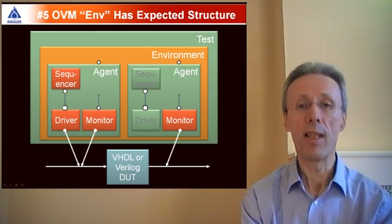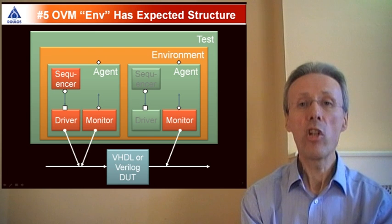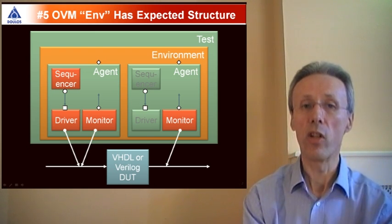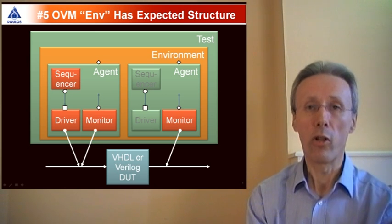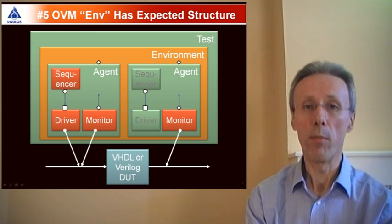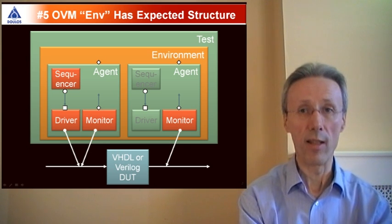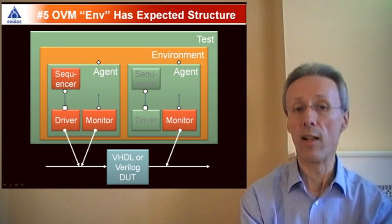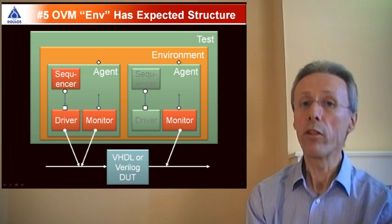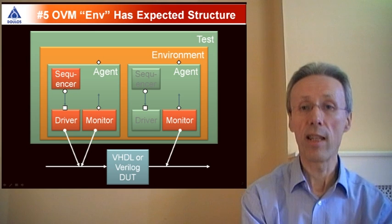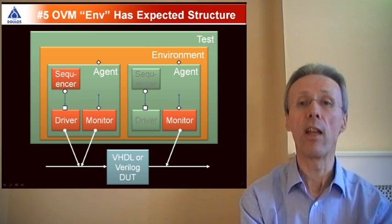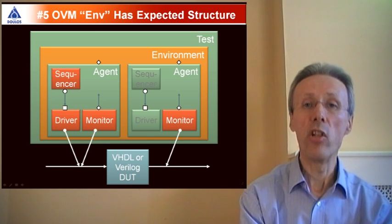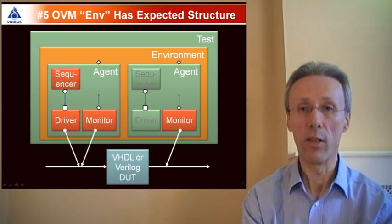Number six: The main building block for verification environments is the agent. An agent has a tightly defined structure consisting of a sequencer that generates transactions, a driver that converts those transactions into pin wiggles on the interface to the design under test, and a monitor that inspects the interface to the design under test and can convert those pin wiggles back to transactions to send up into the remainder of the verification environment. You would typically have one agent for each significant interface on the design under test.